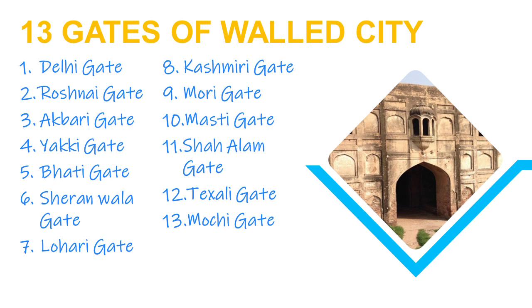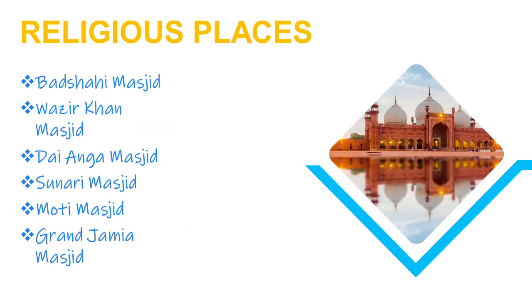Now we will study about the famous religious places of Muslims in Lahore. These include: number one, Badshahi Masjid; number two, Wazir Khan Masjid; number three, Dai Anga Masjid; number four, Sunehri Masjid; number five, Multani Masjid; and number six, Grand Jamia Masjid. A unique feature of all these mosques is that they are all built with red stone and have a very unique style of architecture that is worth seeing.